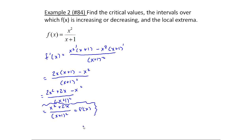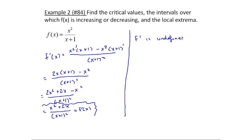Now I need to figure out the partition numbers — where f prime is zero, indicating a horizontal tangent line, and where f prime is undefined. f prime will be undefined wherever the denominator equals zero. So f prime is undefined when (x plus one) squared equals zero, which means x equals minus one.